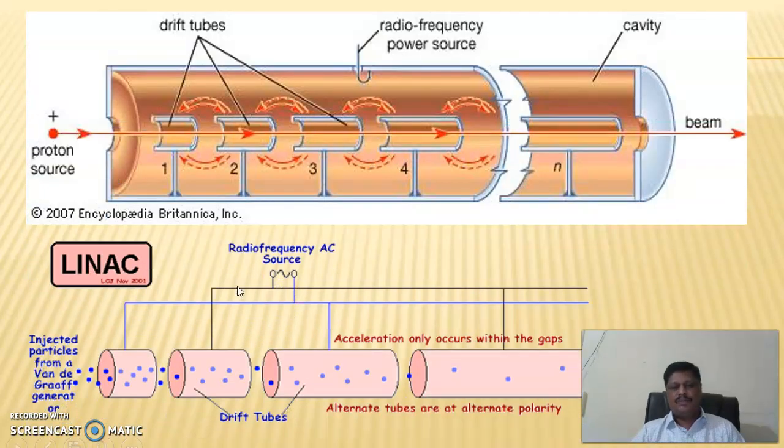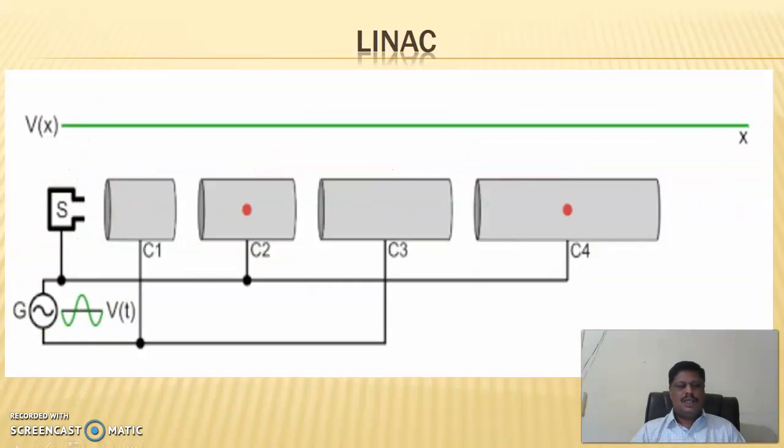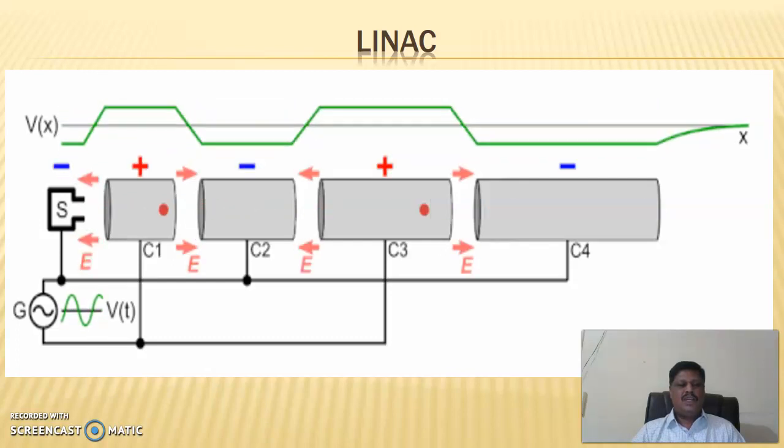So this is the diagram showing the linear accelerator. These are the drift tubes, numbered 1, 2, 3, 4, 5, etc., which are enclosed in an evacuated chamber. This is the ion source. Tubes 1, 3, 5, etc. are connected to one end of the radio frequency power source and 2, 4, 6 are connected to the other end. This shows clearly cylinders 1, 3 are connected to one terminal of the radio frequency AC source, and 2, 4, 6 are connected to the other terminal. This is the positively charged ion, namely protons, which are generated by the Van de Graaff generator.